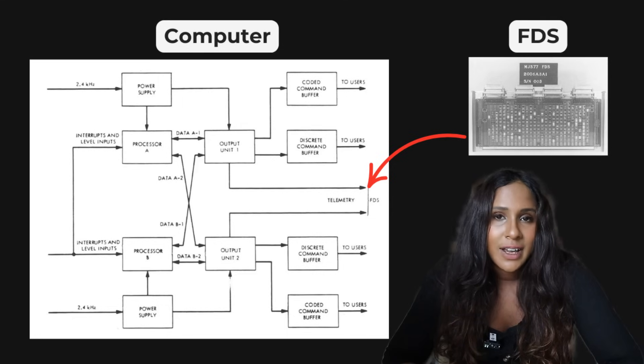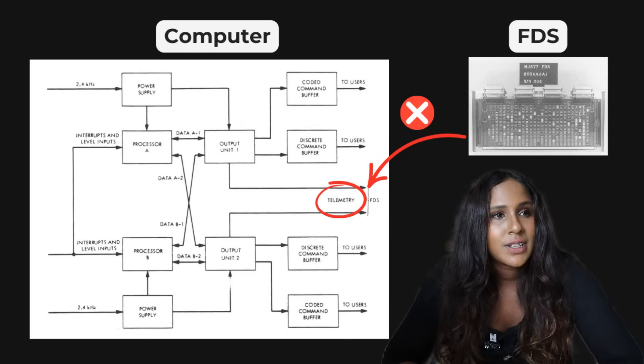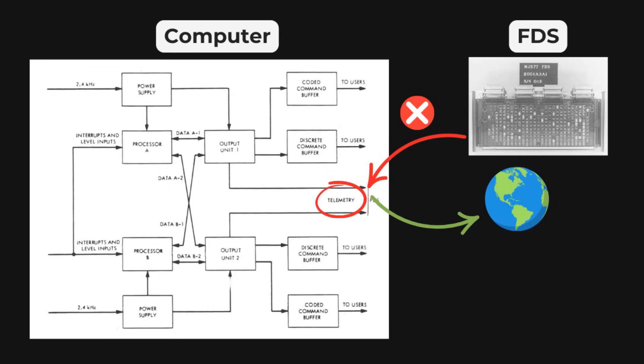And the problem was that the flight data system wasn't communicating properly with another key system called the Telemetry Modulation Unit, or TMU. This system is responsible for actually transmitting the data back to Earth. And instead of sending useful scientific data back to Earth, the TMU was stuck sending repeating patterns of ones and zeros, almost like it was frozen in a single frame.